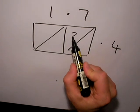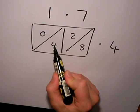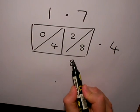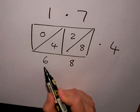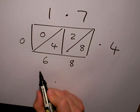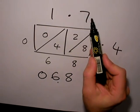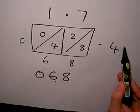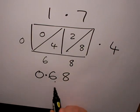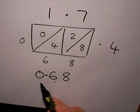Filled in the grid and add up diagonally. So 8 on its own, 2 and 4 is 6, and 0. The answer is 068. I need to put one number behind the decimal point here and one number behind the decimal point there, so I need two digits after the decimal point in the answer. 1.7 multiplied by 0.4 is 0.68.